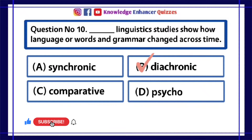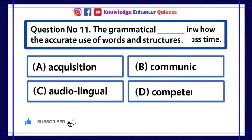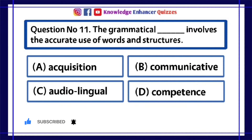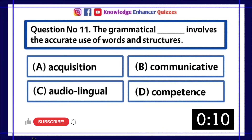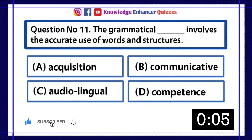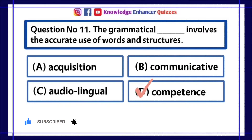Option B is the right answer. Question Number 11: The grammatical dash involves the accurate use of words and structures. A. Acquisition, B. Communicative, C. Audiolingual, D. Competence. Option D is the right answer.